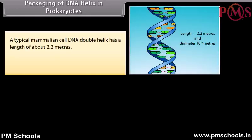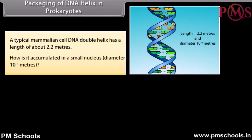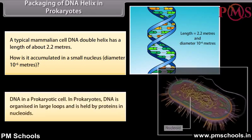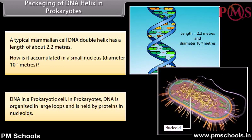Packaging of DNA helix in prokaryotes. A typical mammalian cell DNA double helix has a length of about 2.2 meters. How is it accumulated in a small nucleus? In prokaryotes, DNA is organized in large loops and is held by proteins in nucleoids.